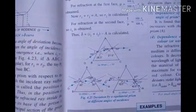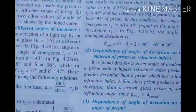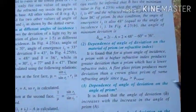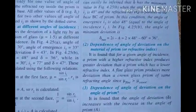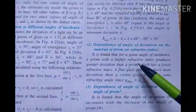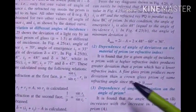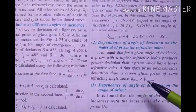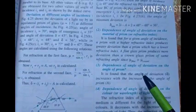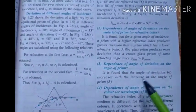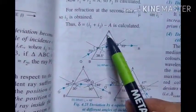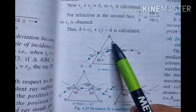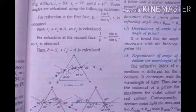Another factor on which the angle of deviation depends is the material of the prism. With the same angle of incidence, if the prism material differs — for example, flint glass versus crown glass — the angle of deviation changes because it depends on the refractive index. A greater refractive index produces a greater angle of deviation, so flint glass produces more deviation than crown glass. The angle of deviation also increases with an increasing angle of prism.